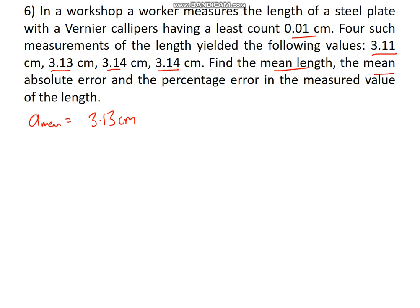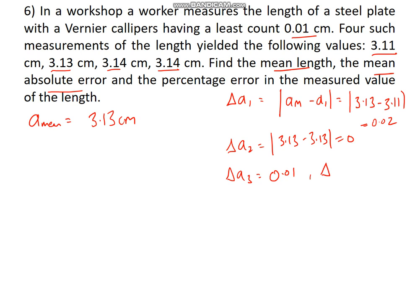Then they want mean absolute error. For mean absolute error, we'll find out absolute error first. How do you find absolute error for a particular reading? Take the difference between the mean value and the actual value. For the first case, 3.13 minus 3.11 equals 0.02. Similarly for the second one, 3.13 minus 3.13, this will be 0. Likewise, the next will give you 0.01, and the fourth will also be 0.01. We are taking only magnitude here, so it won't be minus.